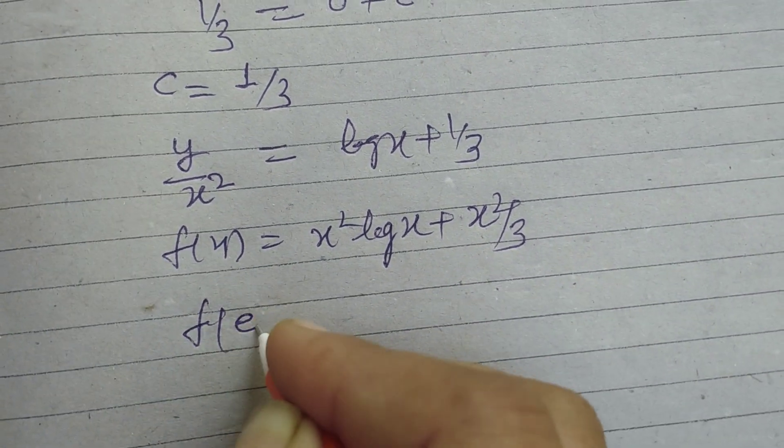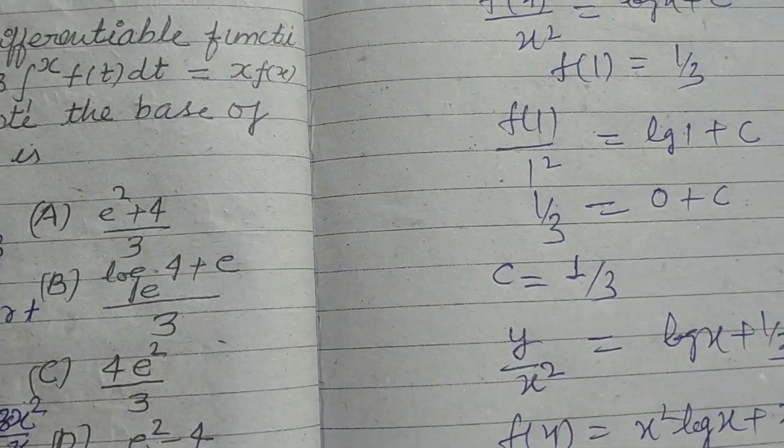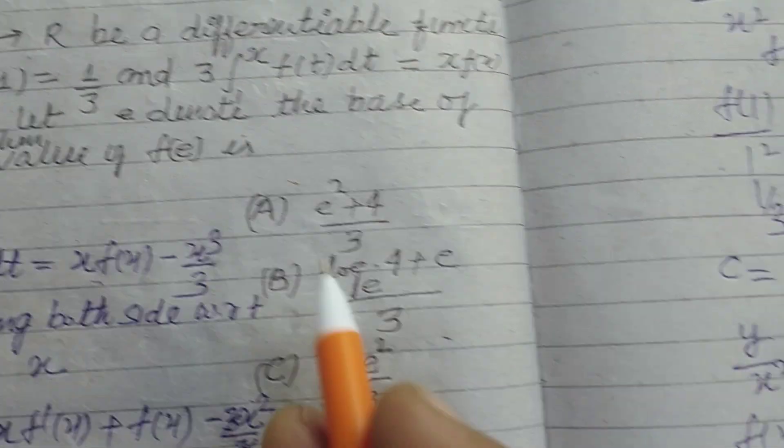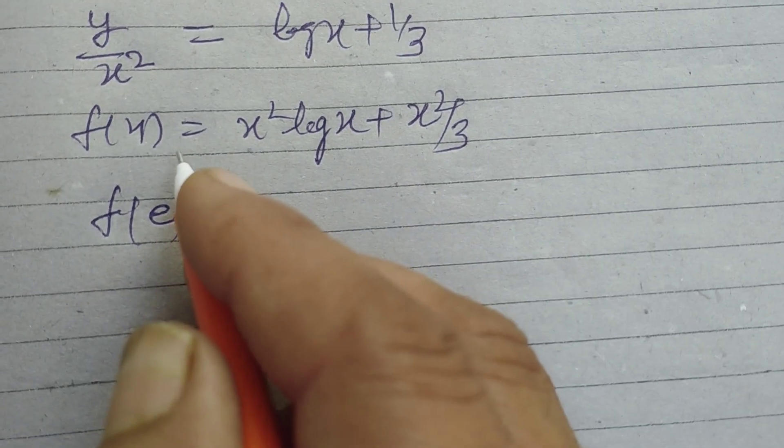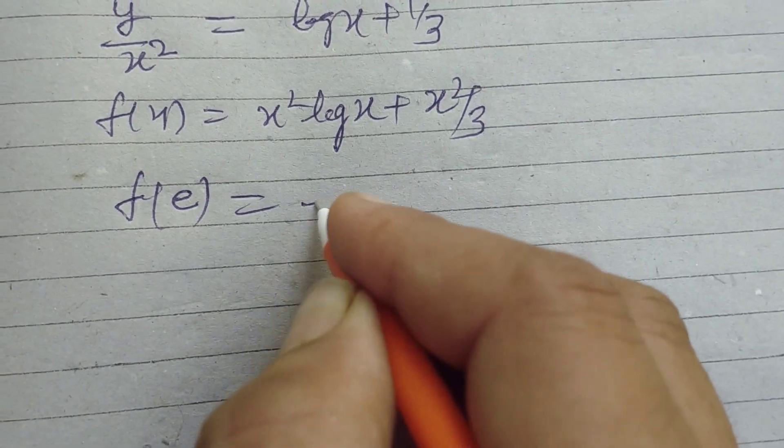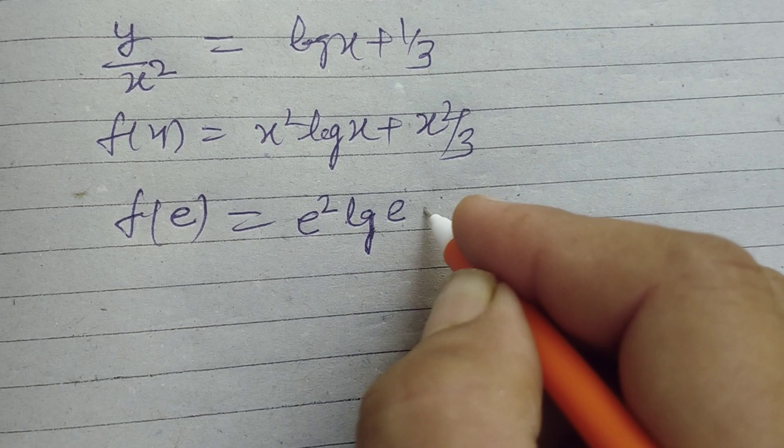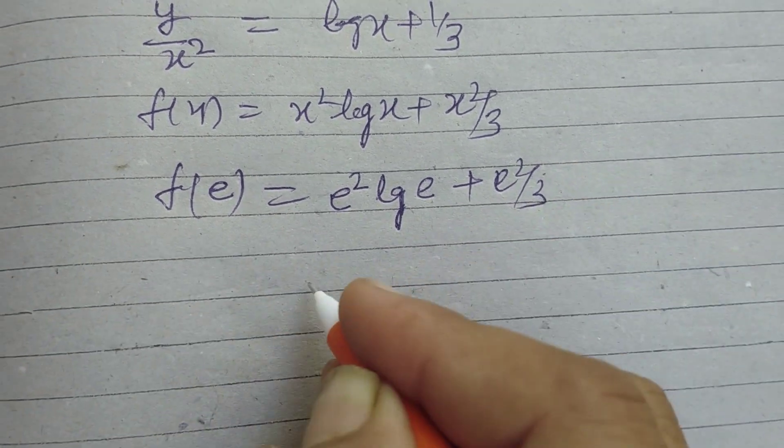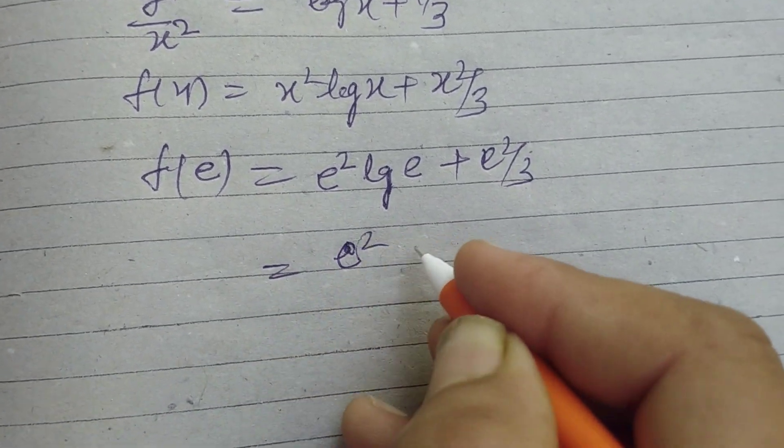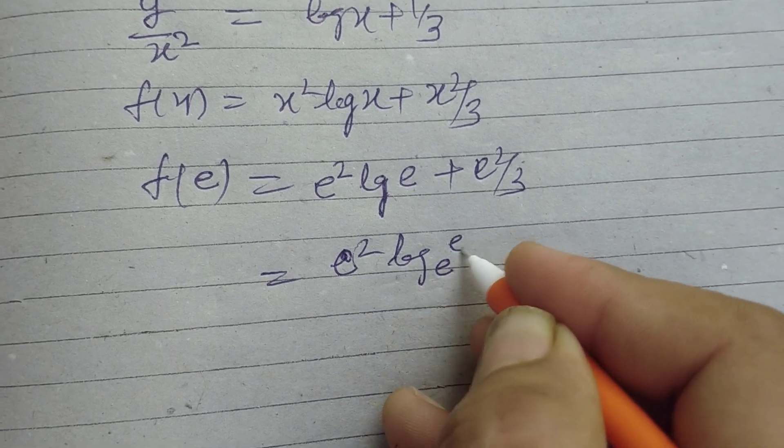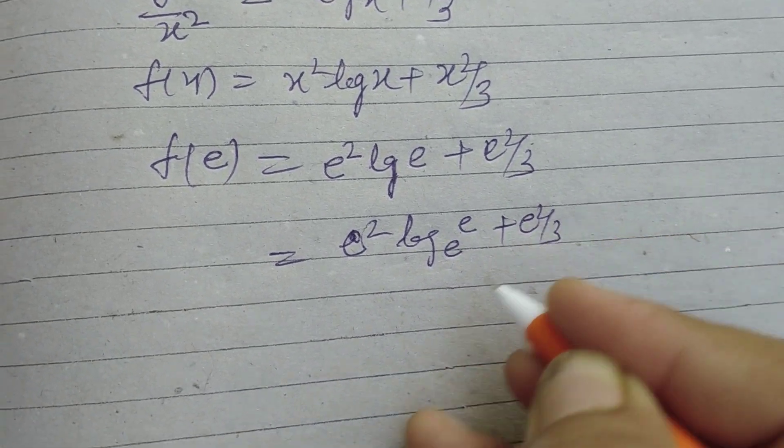Now we want to find f(e). f(e) is asked in the question, so put x = e: f(e) = e²log e + e²/3. Since logₑe = 1, this becomes e² + e²/3.